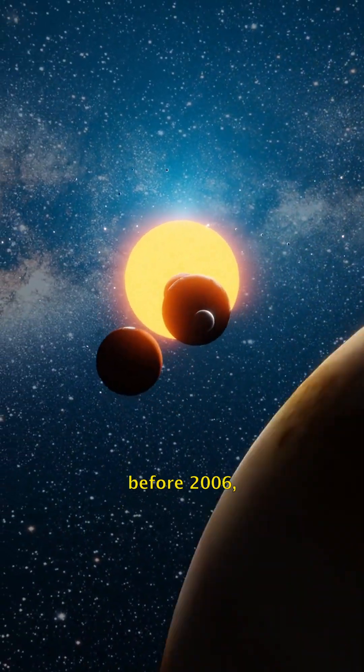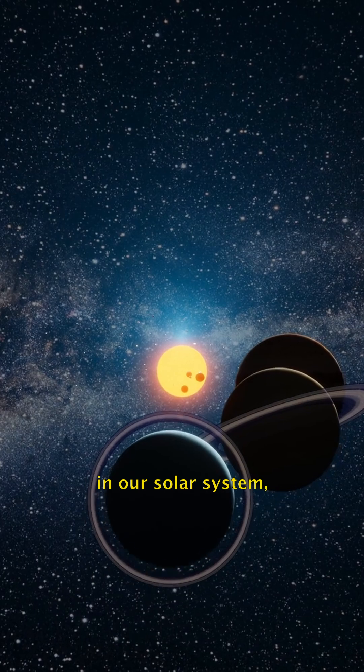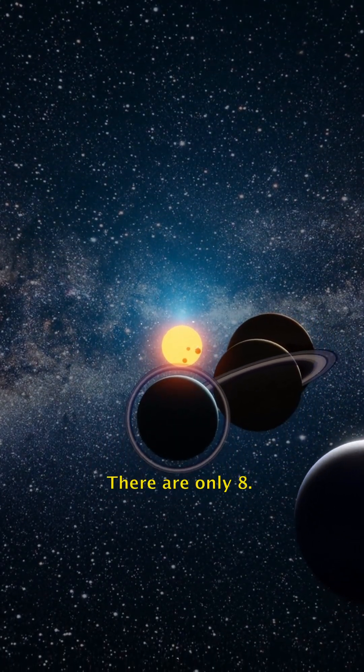So, if you went to school before 2006, you'd probably still think that there are nine planets in our solar system. But nope. There are only eight.